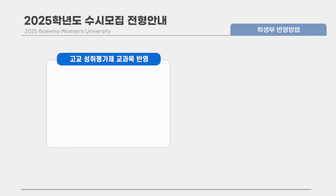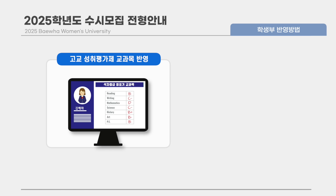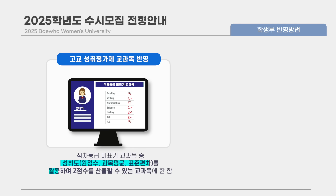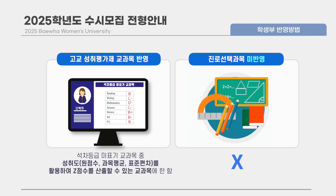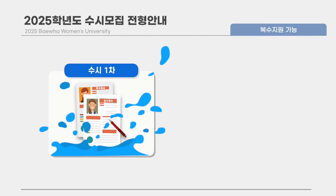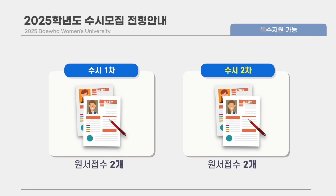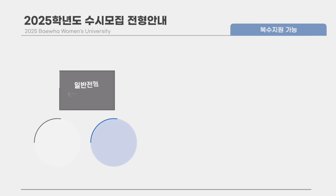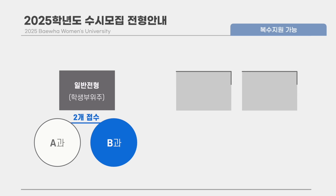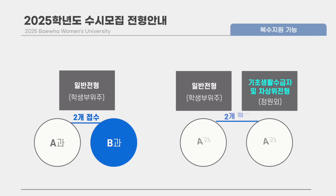고교 성취평가제 교과목 성적 반영은, 석차등급 미표기 교과목 중 성취도를 활용하여 Z점수를 산출할 수 있는 교과목에 한하여 반영합니다. 진로선택 과목은 반영하지 않습니다. 우리 대학은 수시 1차에서 2개, 수시 2차에서 2개까지 원서 접수가 가능합니다. 동일 전형으로 2개 학과 접수, 또는 다른 전형으로 1개 학과를 복수 지원 가능합니다.